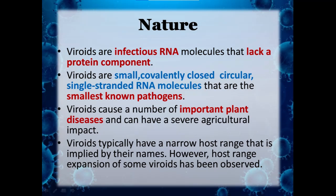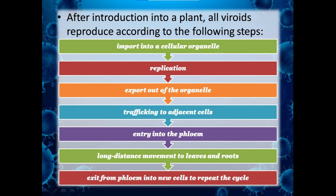However, host range expansion of some viroids has been observed. After introduction into a plant, all viroids reproduce according to the following steps: first they are imported into a cellular organelle, then replication occurs, then export out of the organelle happens, then trafficking to adjacent cells, then entry into the phloem for long-distance movement to leaves and roots, then exit from the phloem into new cells to repeat the cycle.